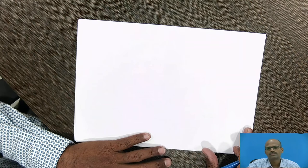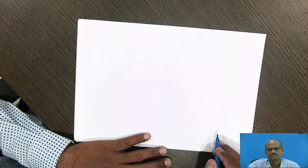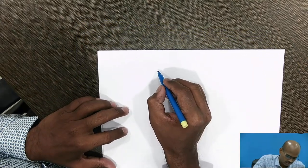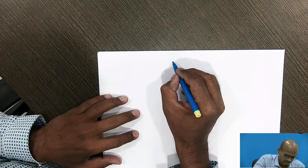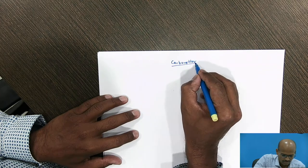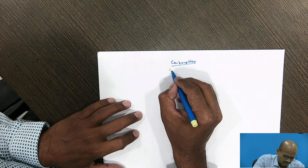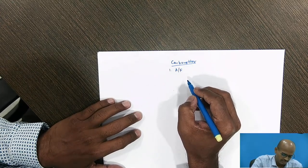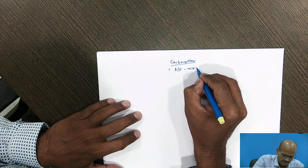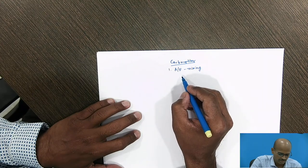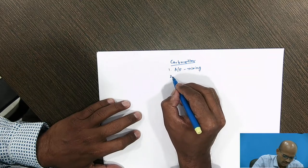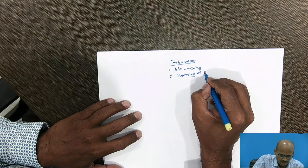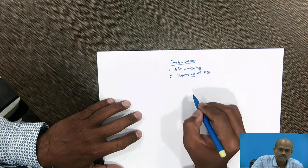The function of the carburetor is to supply the required air-fuel ratio to the engine, depending upon the engine condition. The carburetor performs two tasks: first, it mixes the fuel in the air to prepare a homogeneous mixture; and second, it performs the metering of the air-fuel mixture. So, the controlling and mixing is performed by the carburetor.